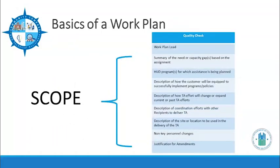Here's a list of items that should be included in the scope. Not all items are listed here, so it is important to refer to the SOPs for all of the requirements. The sixth item on the list is the description of coordination efforts with other recipients to deliver TA. This should be included in the scope if there are other recipients involved with the delivery of the TA. If TA surveys will be administered, the scope should have language indicating which recipient will initiate the survey. Any non-key personnel changes that do occur should be noted in your scope as well, along with any justification for amendments.